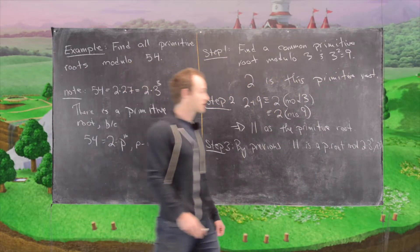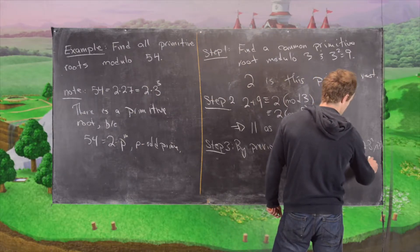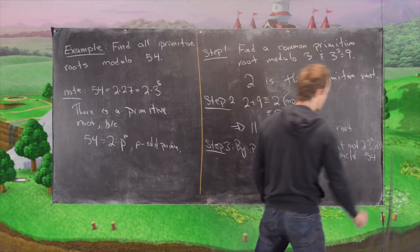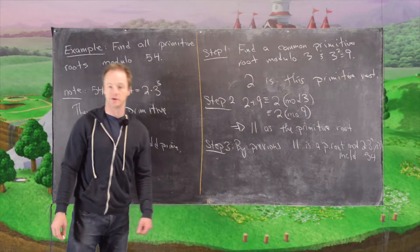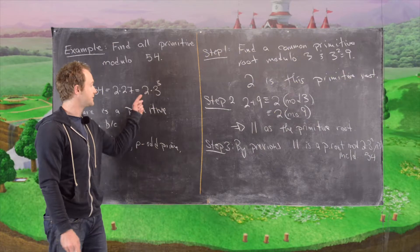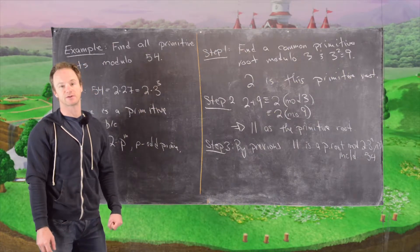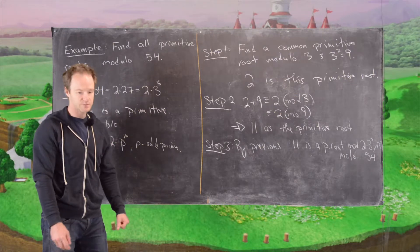And so that includes 54, which is 2 times 3 cubed. And so not only did we find a primitive root modulo 54, but 11 is a primitive root modulo 2 times 3 to the n for any n.